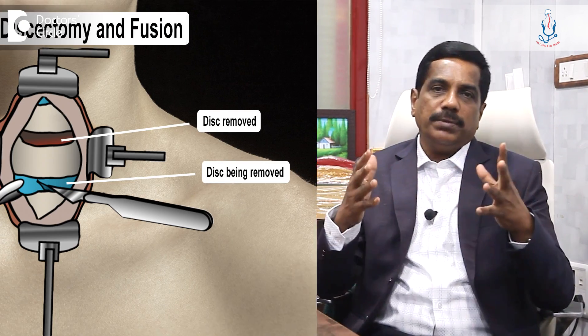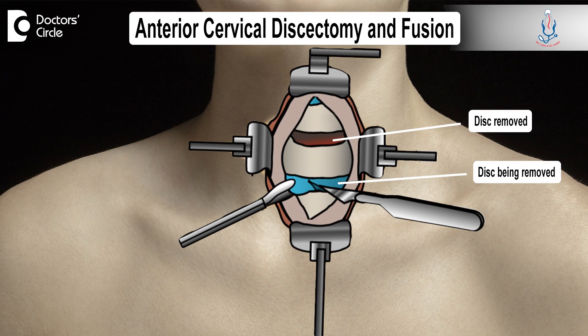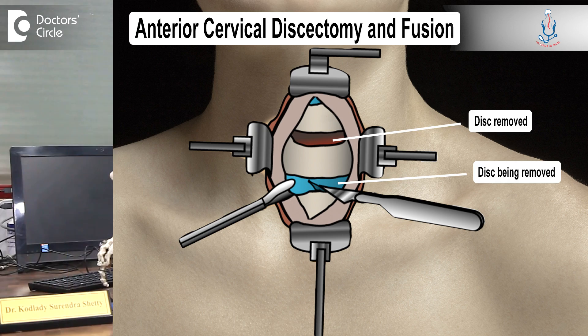If it is a single disc, we can do ACDF without any problem. But when it's multiple levels, if you fuse more than two or three segments, there will be a considerable lessening of the movements of the cervical spine, which we don't want. Even with more stiffness in the spine, there will be adjacent segment degeneration and the next disc may get weakened.